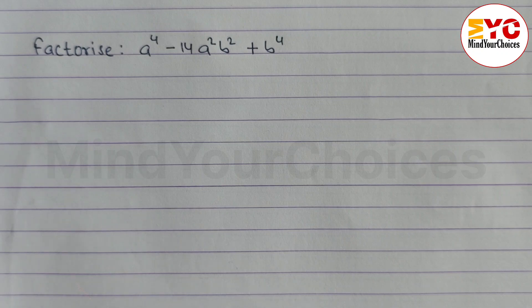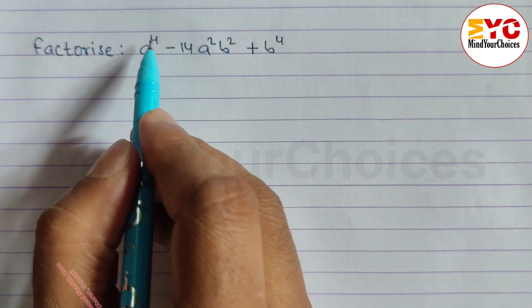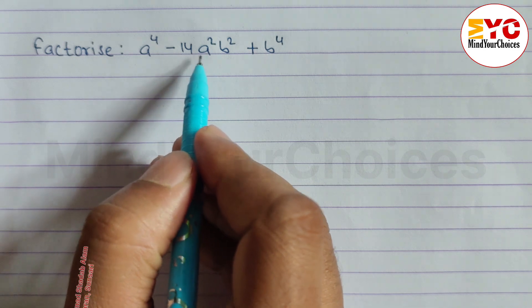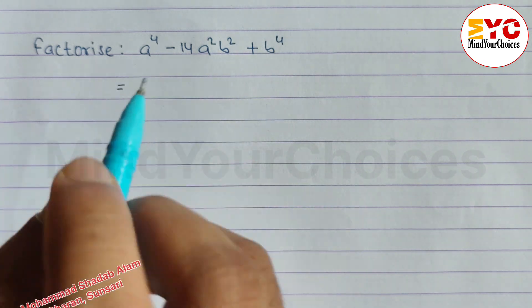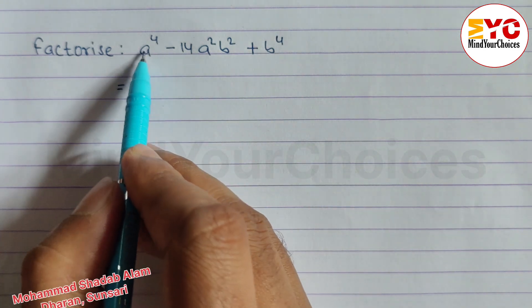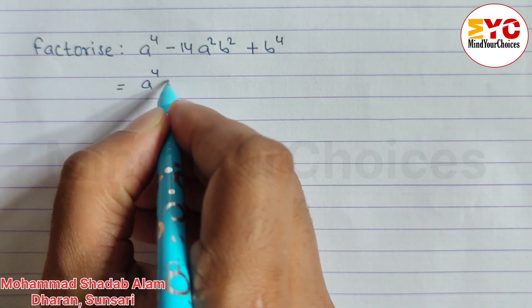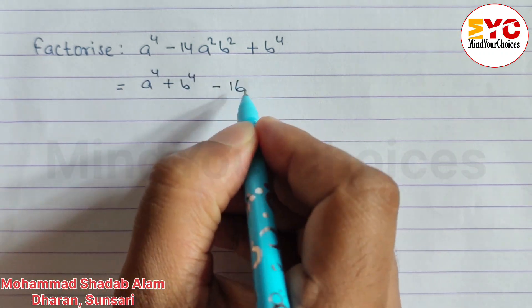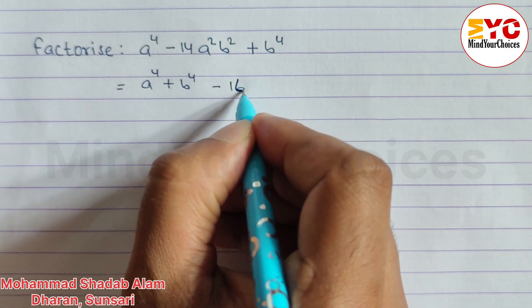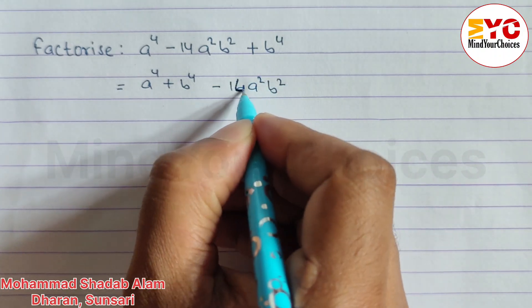In this video I will teach you how to factorize easily. We have a question: a power 4 minus 14 a square b square plus b power 4. First of all, we take the first and last terms, so we can write a power 4 plus b power 4 minus 14 a square b square.